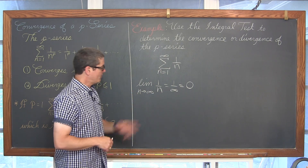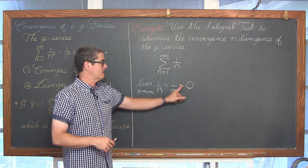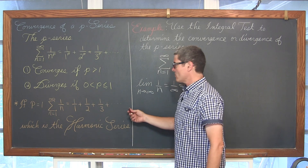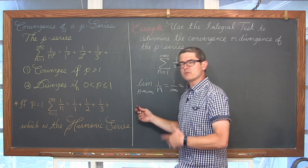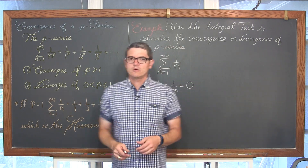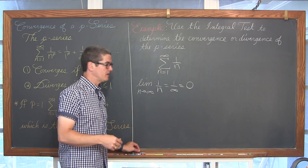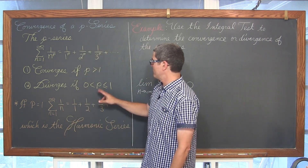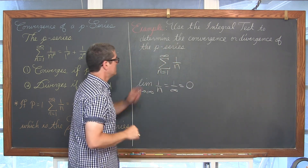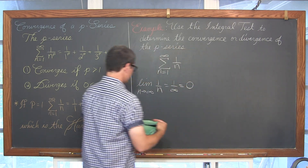Keep this in mind: we found the limit as n goes to infinity of a sub n and it came out to be 0. It kind of seems like you are adding terms that approach 0, so it would seem like the series converges. But we have it right here — if p is equal to 1 or less than 1, this actually will not converge. So let's verify that.